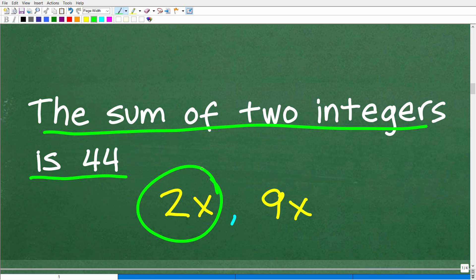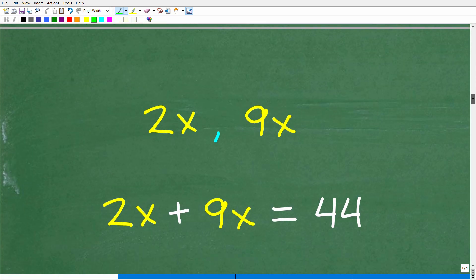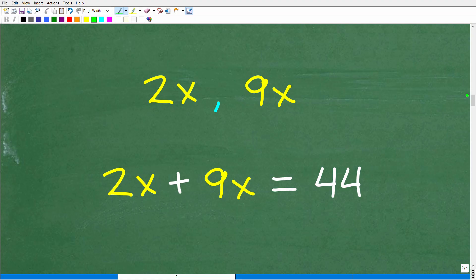Well, we already know that one of our integers will be 2x, the other is 9x, because these two integers are in a ratio of two to nine. And the sum of these two integers is 44. Well, we're well on our way to figuring this out, because we can build an equation. So here's our two integers, the 2x and 9x.